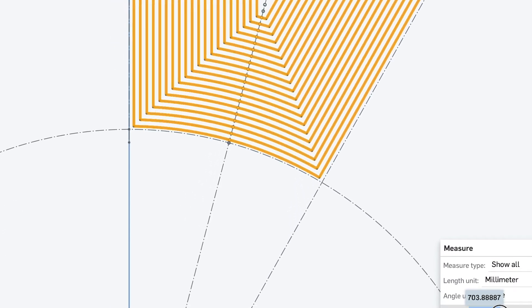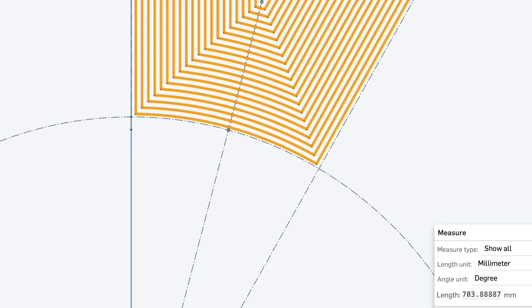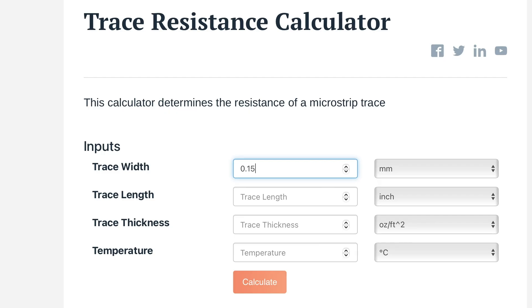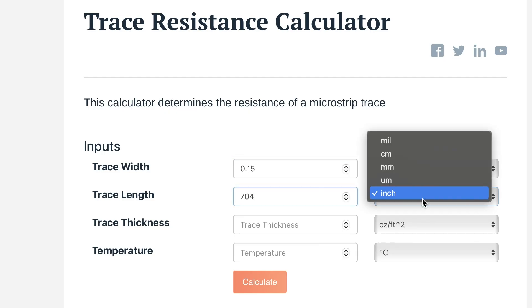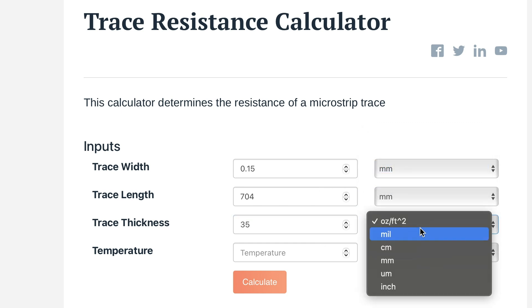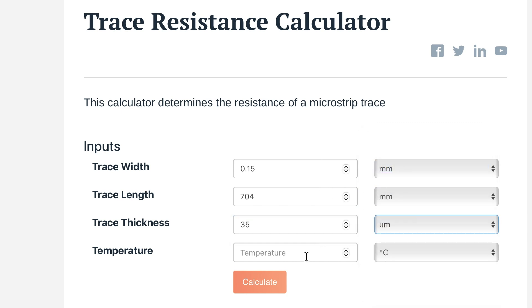Each layer of the coils in this project has a total trace length of 704mm. This theoretically results in a phase resistance of 2.28 ohms, based on a track width of 0.15mm and a copper thickness of 35μm.